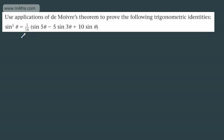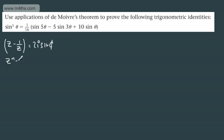I'm hugely relying on you understanding what we did last time. What I'm going to write is the following. We know z minus 1 over z is given equal to 2i sine theta. And in general, z to the n minus 1 over z to the n is given to be 2i sine n theta.